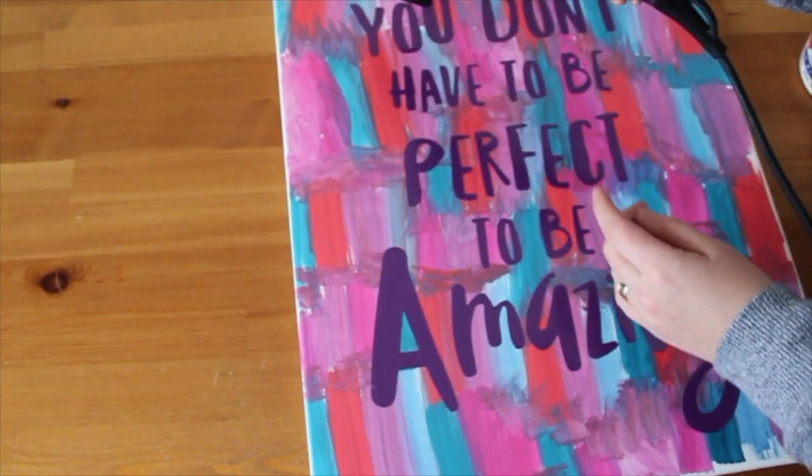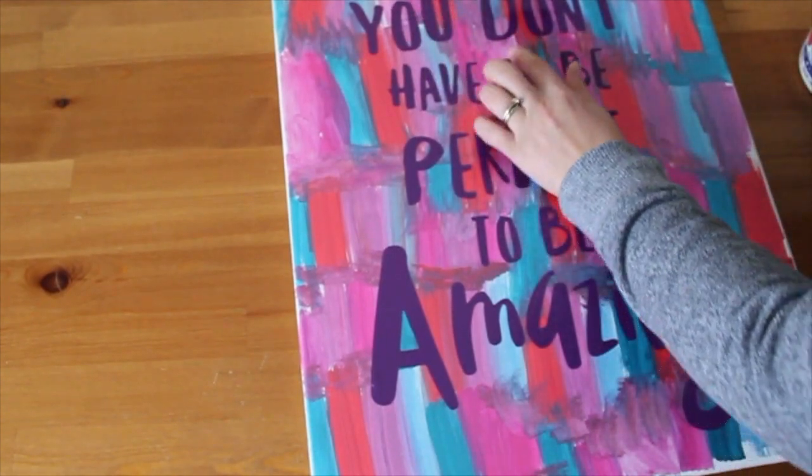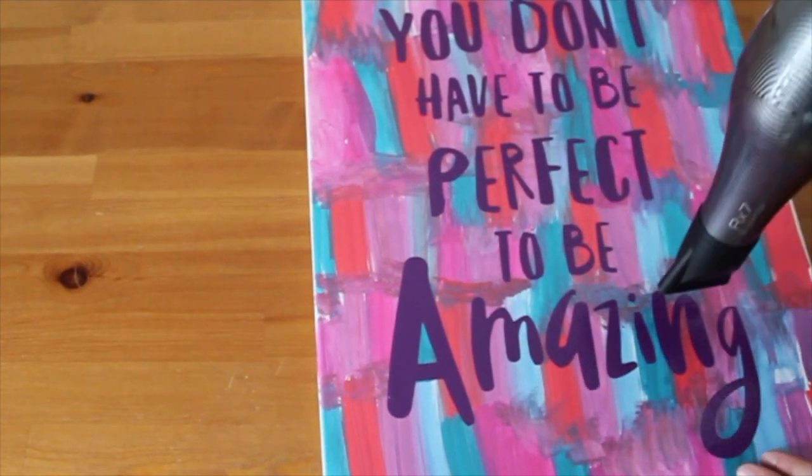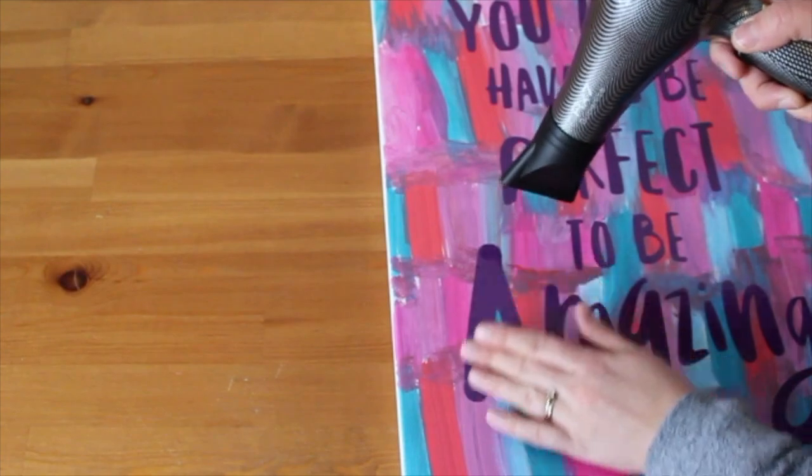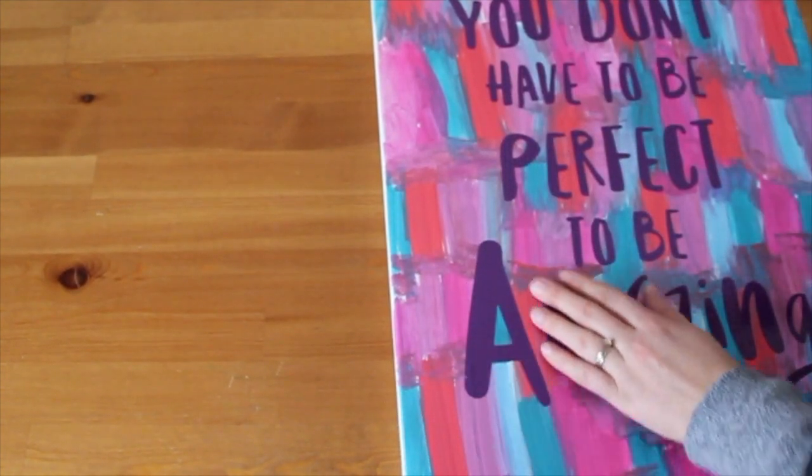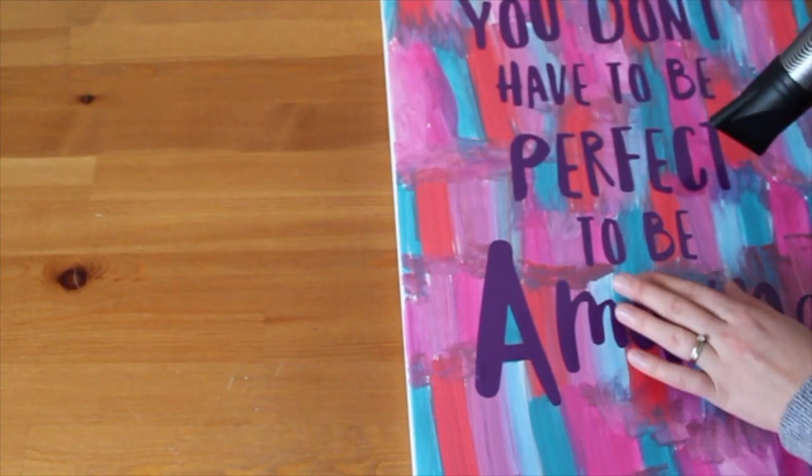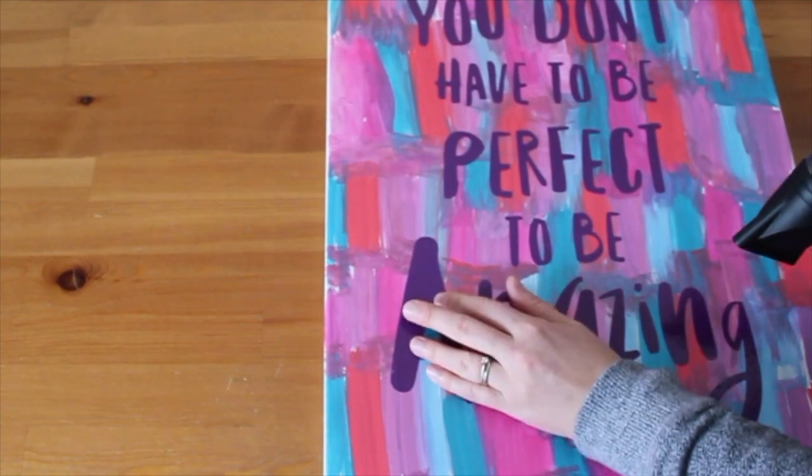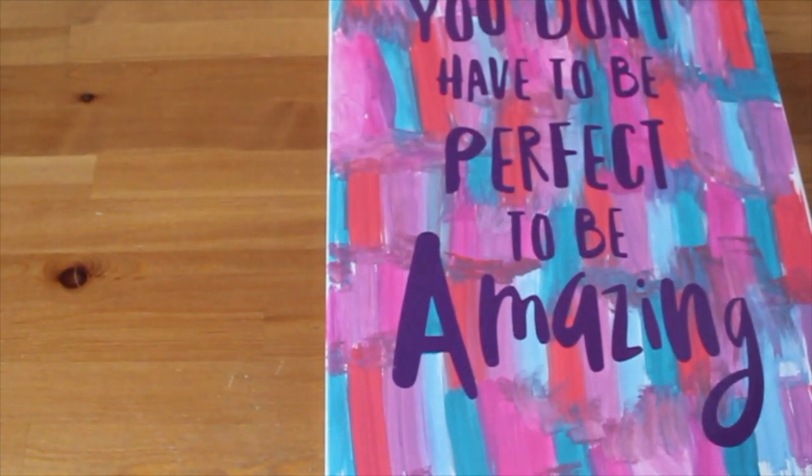We are blow drying the vinyl. I'm only doing this so that the vinyl gets a good seal on the canvas and then the white doesn't leak underneath. But everything looks good, it's on, so the next step now is to paint it all white.